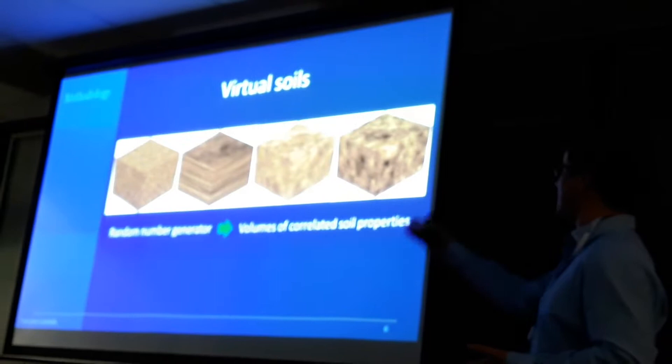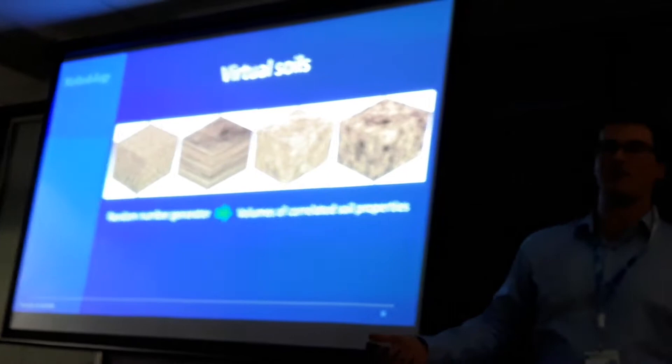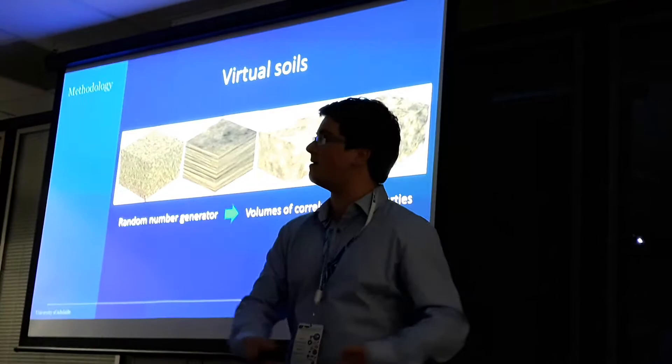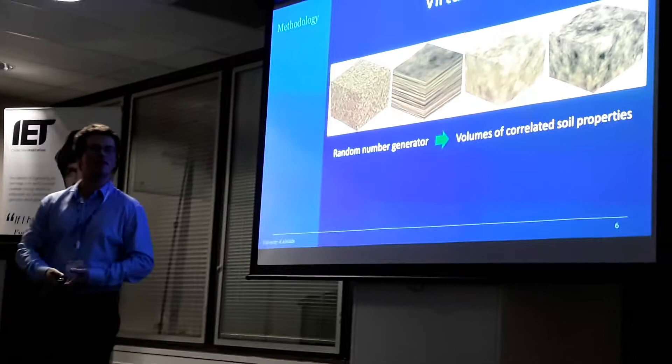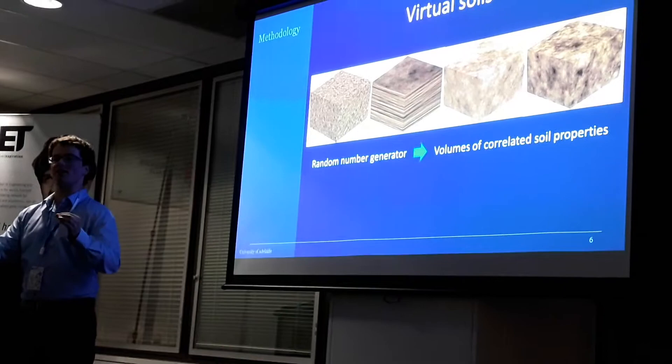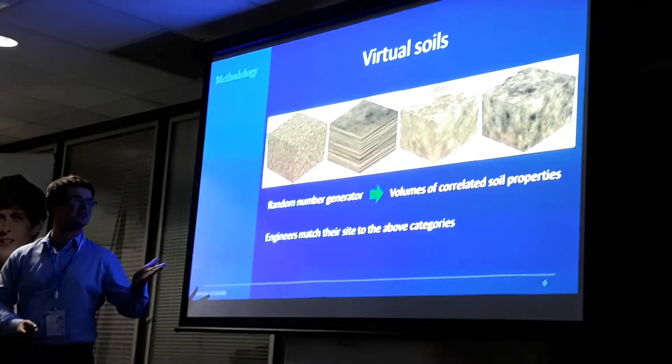Now, what do I mean by correlated? Basically, if you look at the soil here, a little bit further away, the property is going to be fairly similar. But the further and further away you go, the more different it's likely to be. So this correlation reflects the property that soils that are closer together tend to be more similar, just like you'd expect in real life. And an engineer only has to match their site to one of these categories to find out which investigation they need to do based on the recommendations.